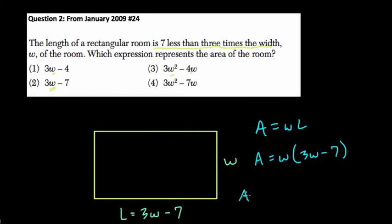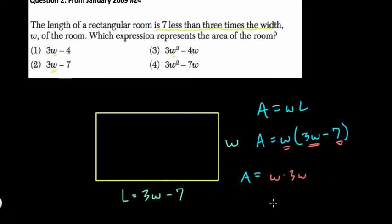Here we can use the distributive property and distribute W to both terms, each term being 3W and 7. So W times 3W is 3W squared and W times 7 is just 7W and we just keep the subtraction sign and so it's 3W squared minus 7W.